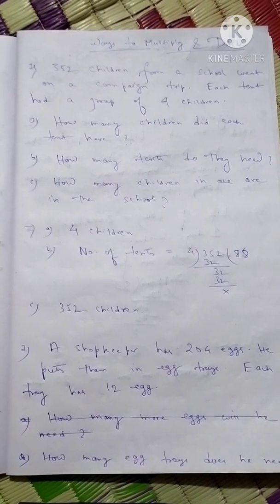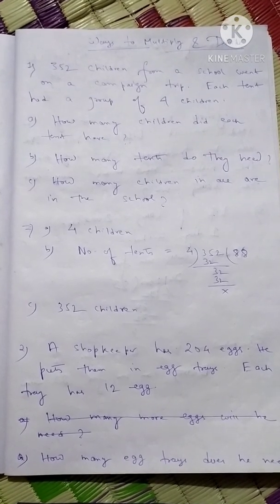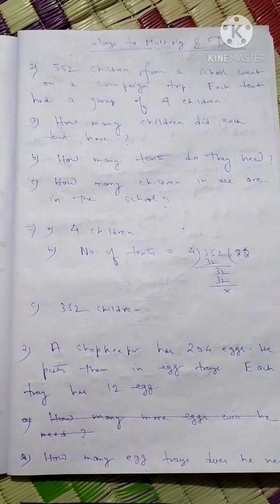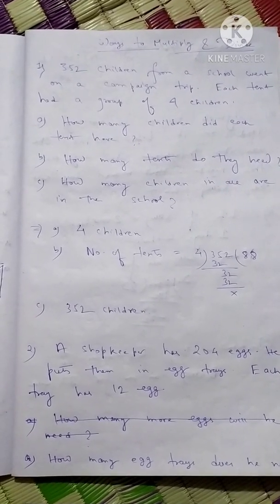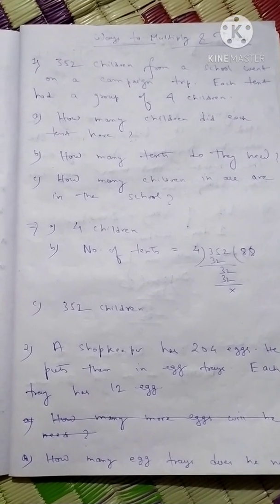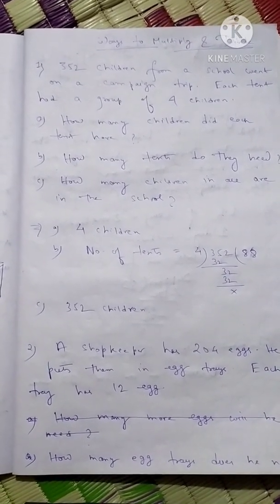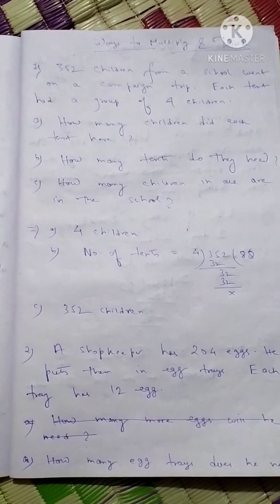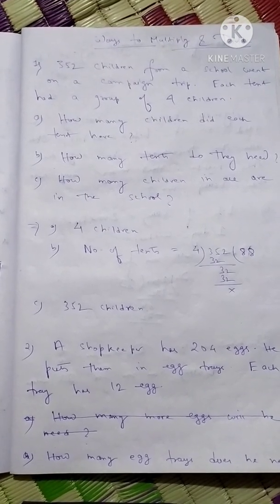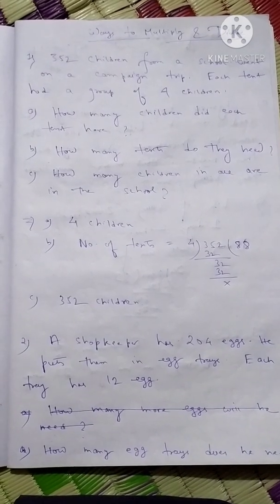Let's start. The first question: 352 children from a school went on a campaign trip. Each tent had a group of four children — so they are going to a camp and staying in tents, with a group of four children per tent. The three questions are: (a) how many children did each tent have, (b) how many tents do they need, and (c) how many children in all are in the school.